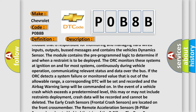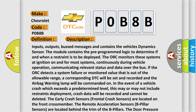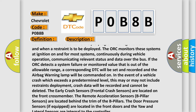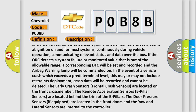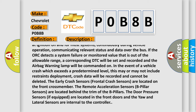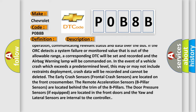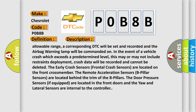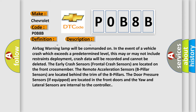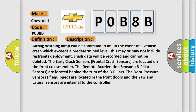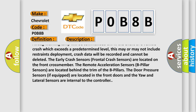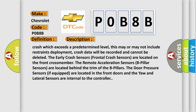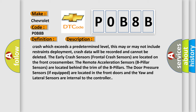The ORC monitors these systems at ignition on and, for most systems, continuously during vehicle operation, communicating relevant status and data over the bus. If the ORC detects a system failure or a monitored value out of the allowable range, a corresponding DTC will be set and recorded, and the airbag warning lamp will be commanded on. In the event of a vehicle crash exceeding a predetermined level, crash data will be recorded and cannot be deleted. Frontal crash sensors are located on the front crossmember, remote acceleration sensors are located behind the trim of the B-pillars, door pressure sensors are located in the front doors, and yaw and lateral sensors are internal to the controller.